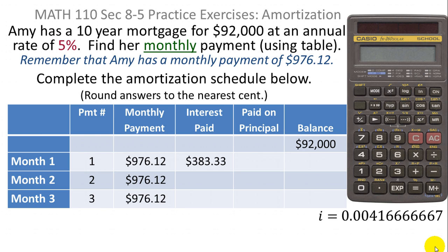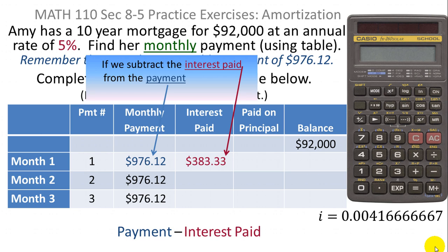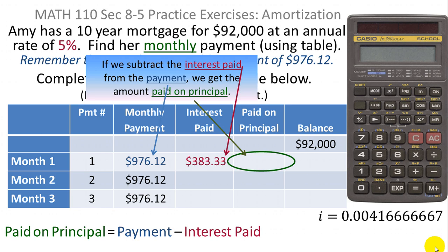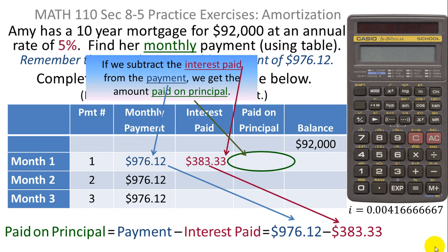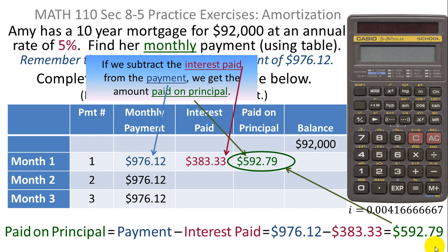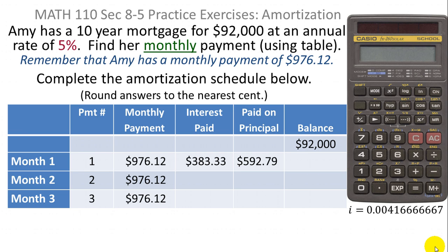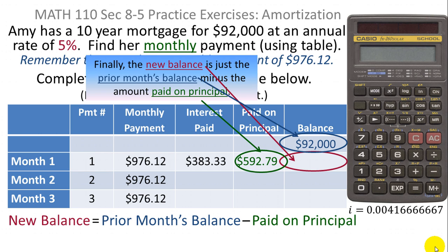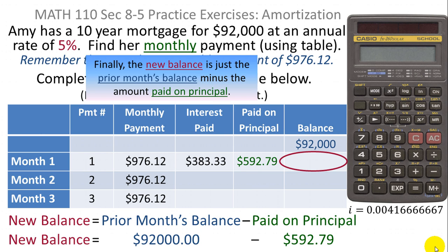The amount paid on principal is the difference between the monthly payment and the interest paid. The monthly payment was $976.12 minus the interest paid of $383.33, giving $592.79 paid on principal. The new balance is the previous month's balance minus the amount paid on principal, since interest is the bank's profit and doesn't reduce the loan. So $92,000 minus $592.79 gives a balance of $91,407.21 at the end of month one.